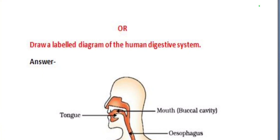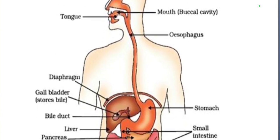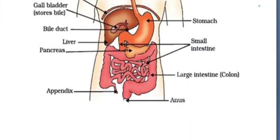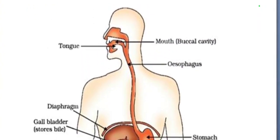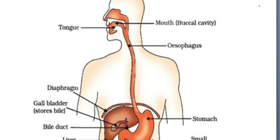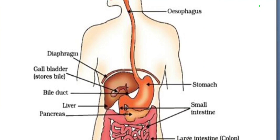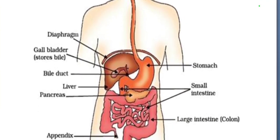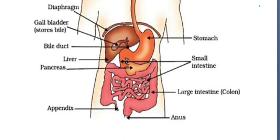The next question is: draw a labeled diagram of the human digestive system. For this question, you have to draw the diagram of the human digestive system, which consists of the following parts: tongue, mouth, oesophagus, gallbladder, stomach, bile duct, liver, small intestine, pancreas, large intestine, appendix and anus.